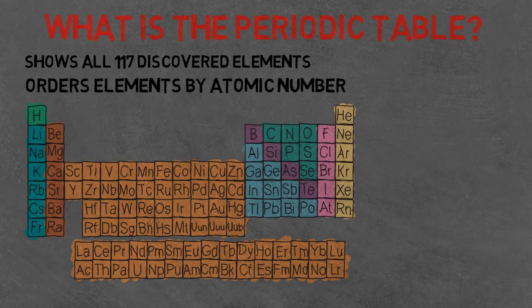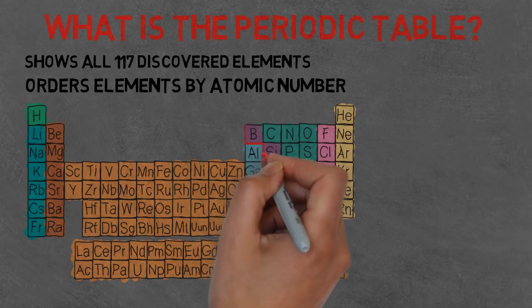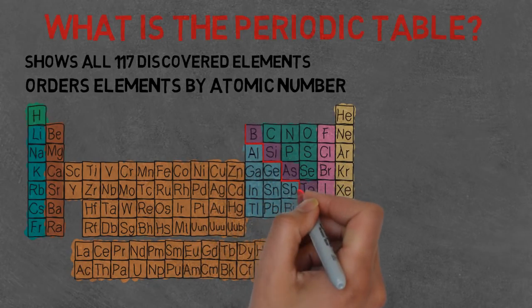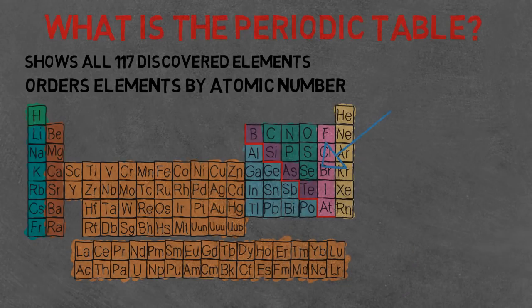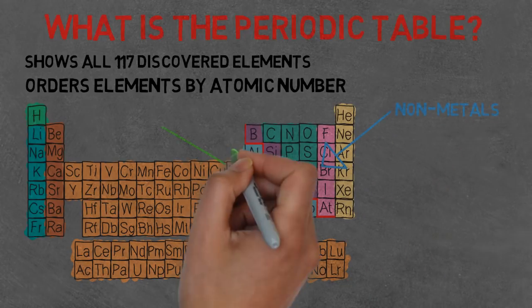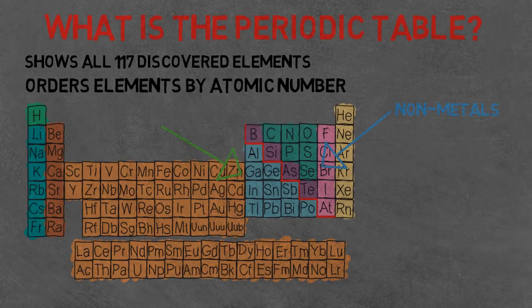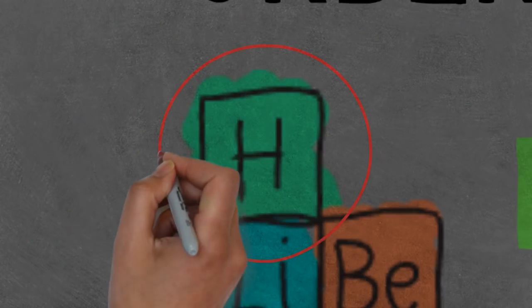If you look at the periodic table shown, have a guess what the red line represents. I hope you said it separates the non-metals and metal elements, except for one: hydrogen, which is located on the metal side of the table but is categorized as a non-metal.